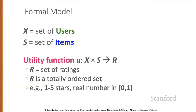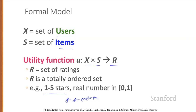Let's see a formal model. We'll have users and items. Users have preferences for certain items represented as a utility matrix, giving a value representing for each user-item pair what we know about the preference of that user for that item. Values come from an ordered set — for example, integers from one to five representing the number of stars that the user gave as a rating for that item. The matrix is sparse, meaning that most entries are unknown; we have no explicit information about the user's preference for that item.